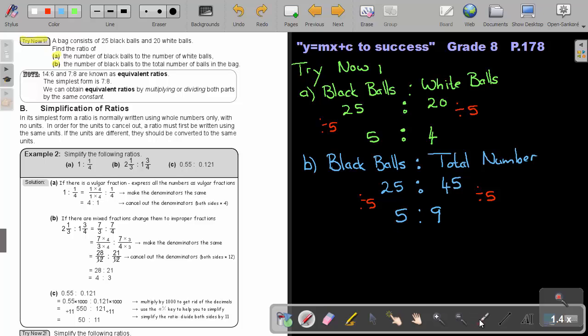Let's just read through this note. 14 to 16 or 7 to 8 are known as equivalent ratios. So, before it's simplified, you will see I can divide by 2 to get 7. I can divide by 2 to get 8. The simplest form is 7 to 8. We can obtain equivalent ratios by multiplying or dividing both parts by the same constant.